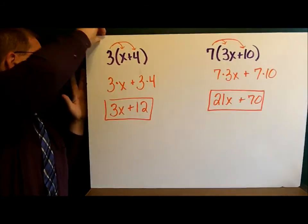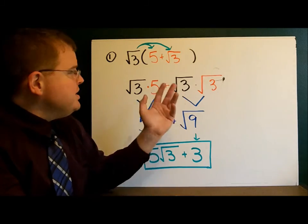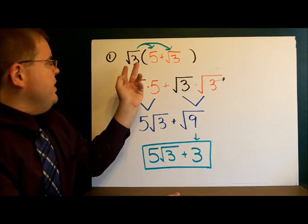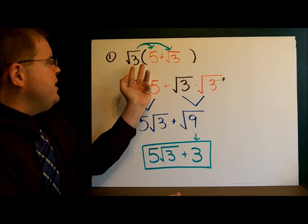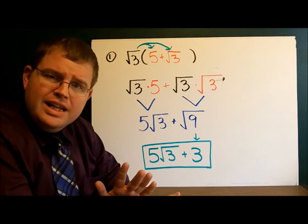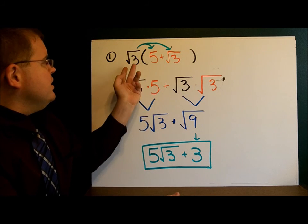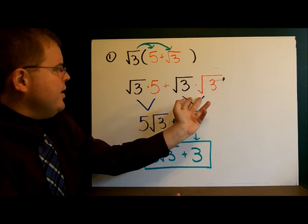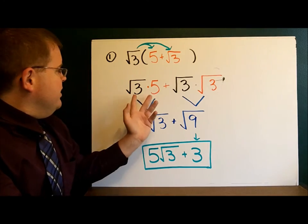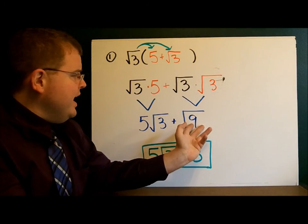Take a look at this. In example number 1, we have the square root of 3 times this quantity, 5 plus the square root of 3. Meaning we have to multiply the 5 and the square root of 3 and the 2 square roots of 3. So here's my recommendation. Let's write it out. The square root of 3 times 5, the square root of 3 times the square root of 3. And now we can multiply everything together nicely. This is 5 square roots of 3 and this is the square root of 9.